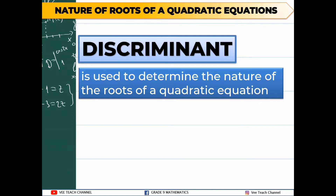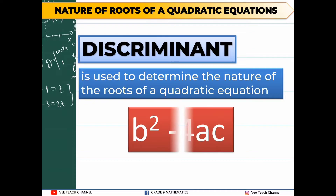In finding the discriminant, we have to follow the formula. The formula for finding the discriminant is b squared minus 4ac. This formula comes from the quadratic formula.